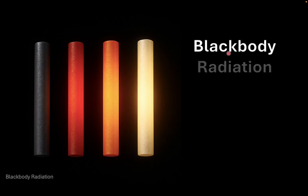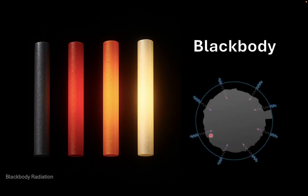A blackbody is an ideal object that absorbs all incoming light and heat without reflecting any of it. The absorbed energy is converted into thermal energy of the blackbody.